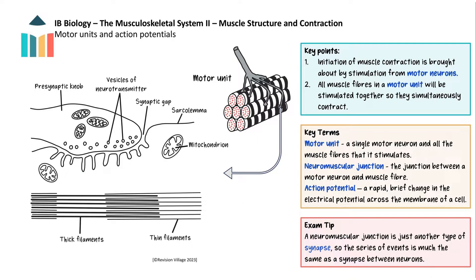Now let's look at the process of muscle contraction. The initiation of muscle contraction is brought about by stimulation from motor neurons. A single motor neuron and all the muscle fibres it stimulates is known collectively as a motor unit — the functional unit of skeletal muscle. All muscle fibres in a motor unit receive stimulation simultaneously and therefore contract at the same time. Motor neurons are connected to muscle fibres via neuromuscular junctions, which are a type of synapse and work in much the same way as synapses between two neurons.